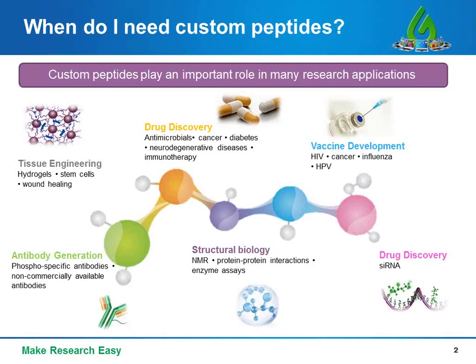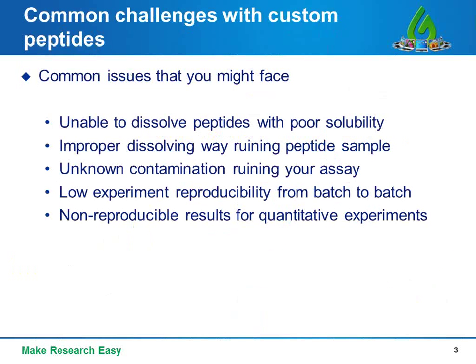GenScript's peptide department has 10 years of experience in peptide production, and approximately 10,000 high-quality items have been successfully delivered every year. Custom peptides synthesized at GenScript have been used in many research fields such as antibody generation, tissue engineering, drug discovery, structural biology, and vaccine development.